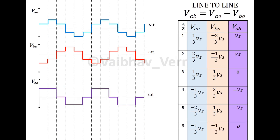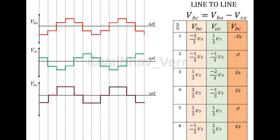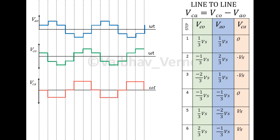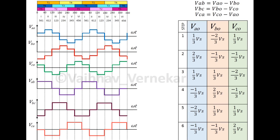For obtaining line to line plot VAB, subtract VBO from VAO. The highest magnitude obtained is Vs and the lowest is minus Vs. The voltage values for VBC are similar with shift of 60 degrees. Voltage VCA is difference between VCO and VAO. The complete plot looks like that shown in the figure.